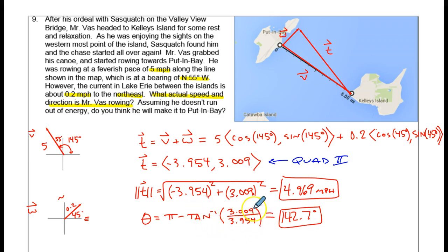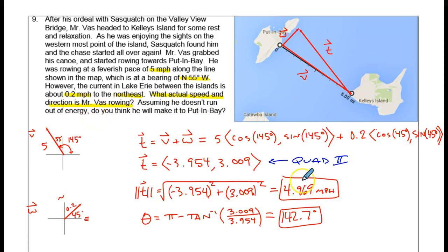I always keep my calculator in radians, so the output is in radians. I have to do the conversion of times 180 over pi to turn it into degrees. So let's answer the question: what actual speed and direction is he rowing? The actual speed is 4.969 miles per hour, and the direction is 142.7 degrees measured in standard position.